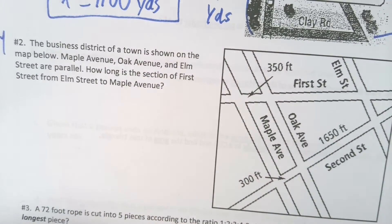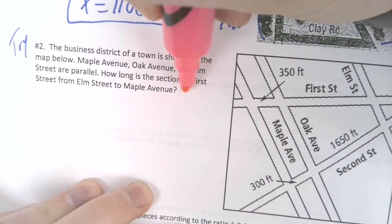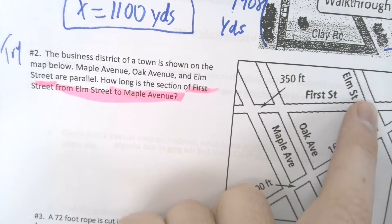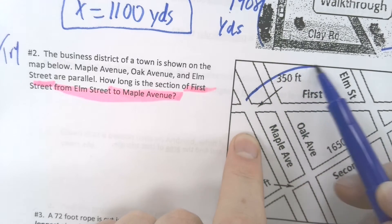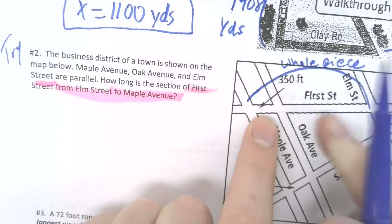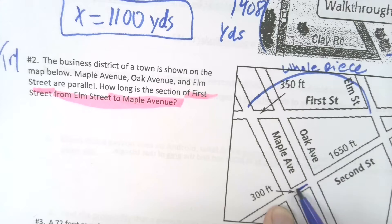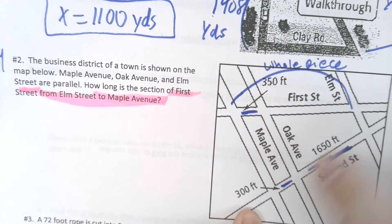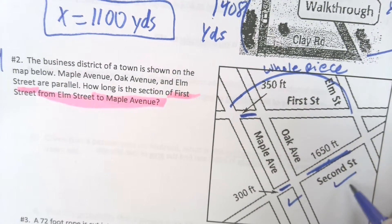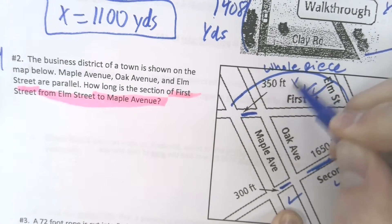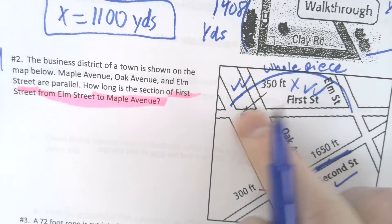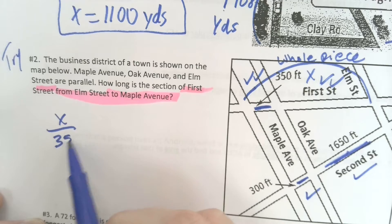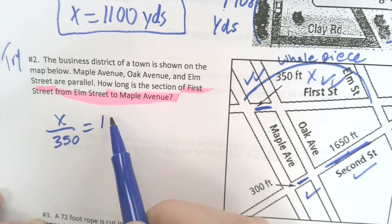All right. Now, number two. Once again, the labeling is crucial, guys. And knowing what you want to find is crucial. Check it out. How long is the section of First Street from Elm to Maple Avenue? So in other words, here's First Street from Elm all the way to Maple Avenue, this second row. We want to know how long is this whole piece? Here's the problem. We know this is 300. We know this is 1650. We know this is 350. The problem is we don't know how long this piece is. So if you have three pieces, by the way, parallel lines. So we know these are going to be proportional. And we know whatever this piece of First Street between Elm and Oak is, we'll call it X. And this piece between Oak and Maple Avenue that's 350, we know those are going to be proportional as well. So you guys know what to do. Set it up. X over 350 equals, and now be careful here.